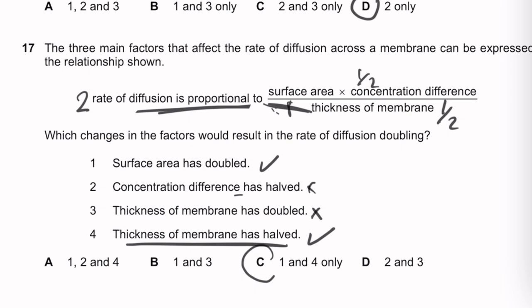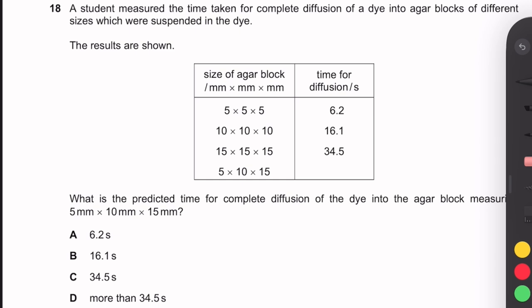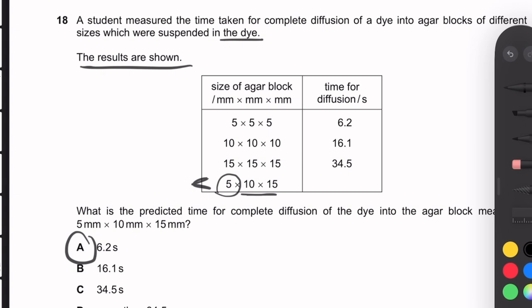Question 18: A student measured the time for complete diffusion of dye into agar blocks of different sizes suspended in the dye. The block with the smallest diffusion distance will have the shortest time for complete diffusion. The answer is the option with the smallest time — letter A.